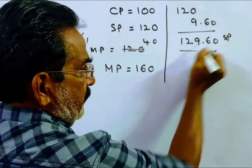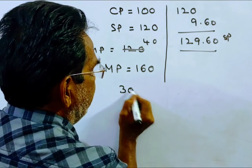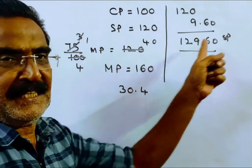The difference must be the discount. The difference is 30.40, which is 30 rupees 40 paise, the difference between them.